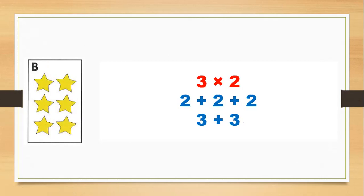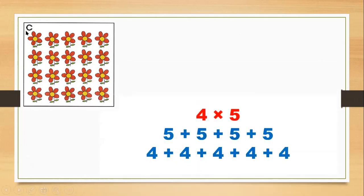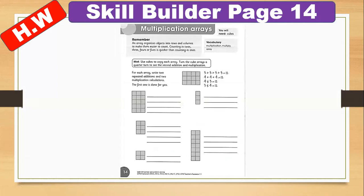You can arrange items in rows and columns and quickly add or multiply numbers. Now let's look at the flowers — there are four rows and five columns. Each row has five flowers, so you write four, five times. For homework, go to the Skill Builder on page 14. You have to check the boxes, find how many rows and how many columns, and write your answers on the lines. Thank you so much, take care, goodbye.